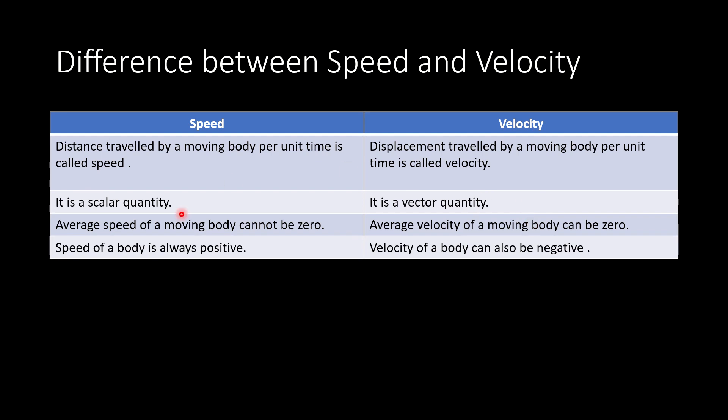Speed of a body is always positive because distance is always positive. But velocity may also be positive or may also be negative because displacement can also be negative. We have seen the cases of negative displacement in the video on displacement and distance.